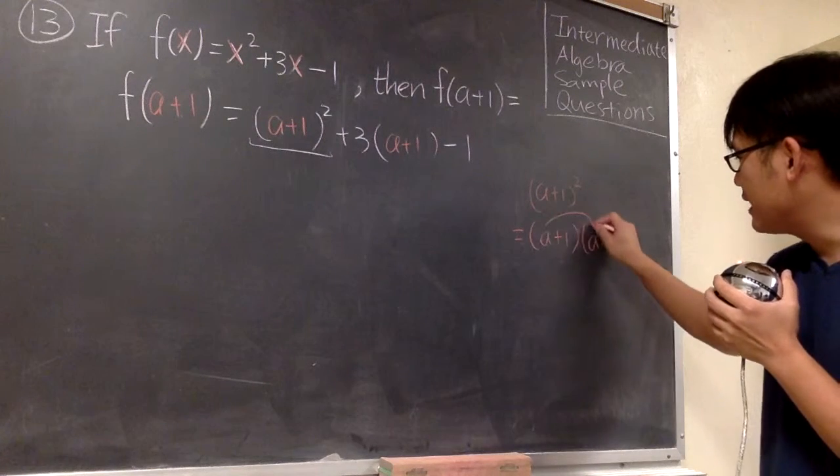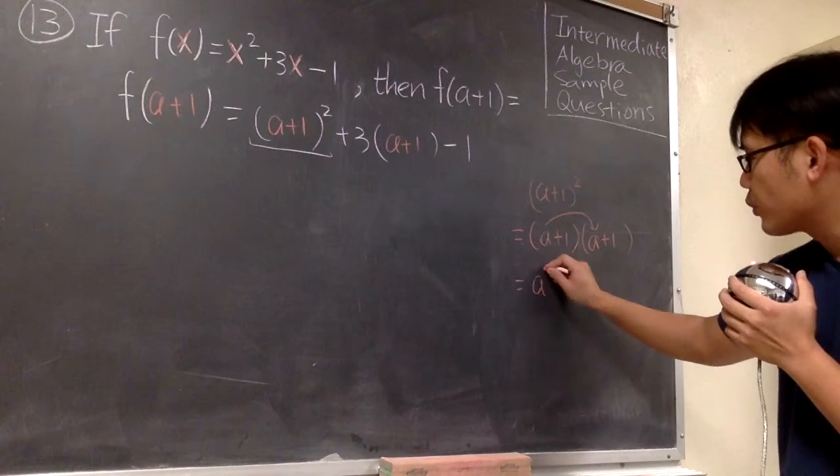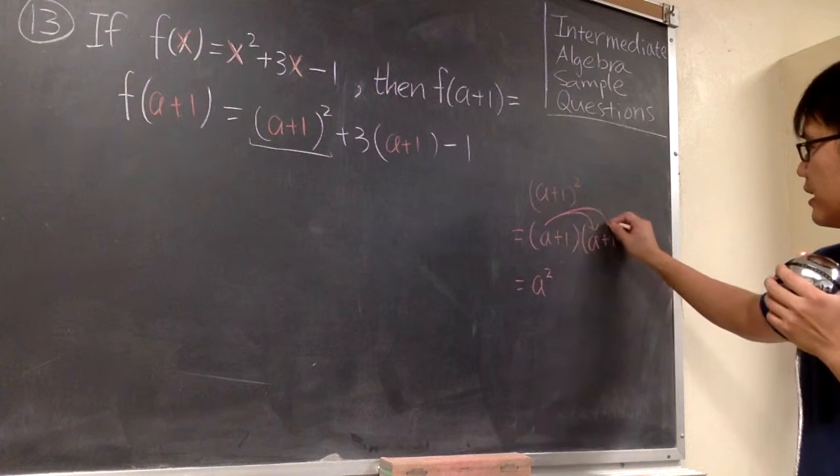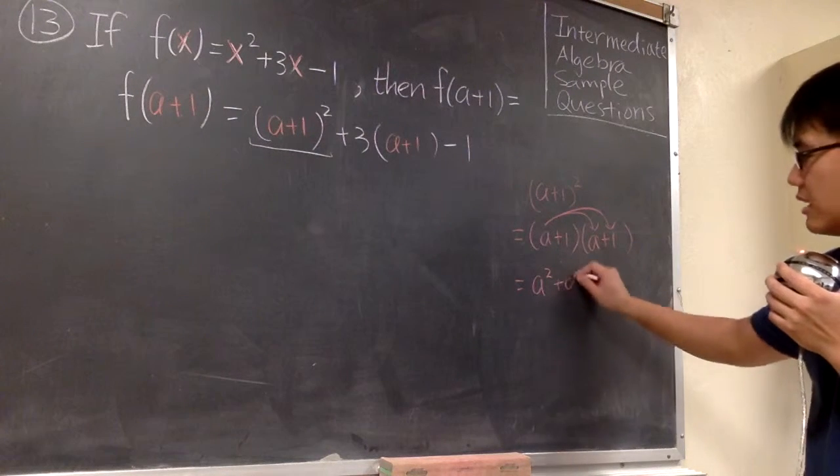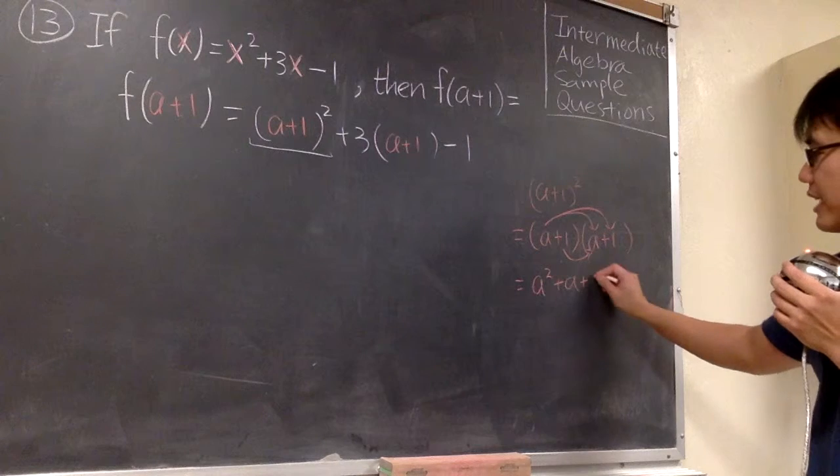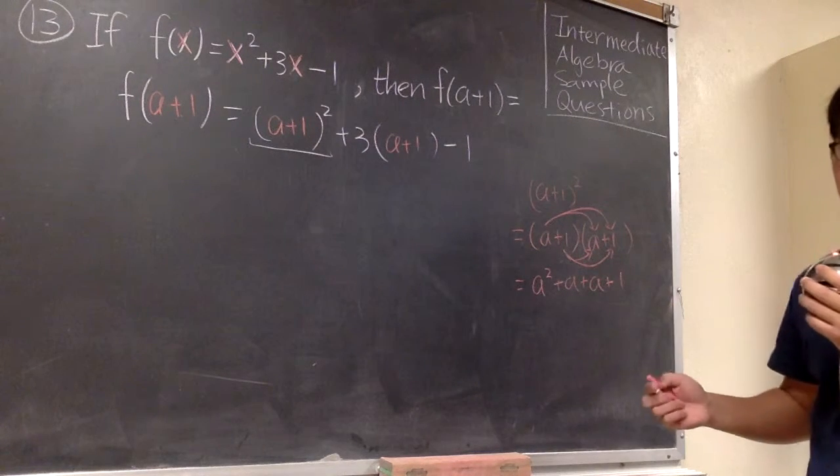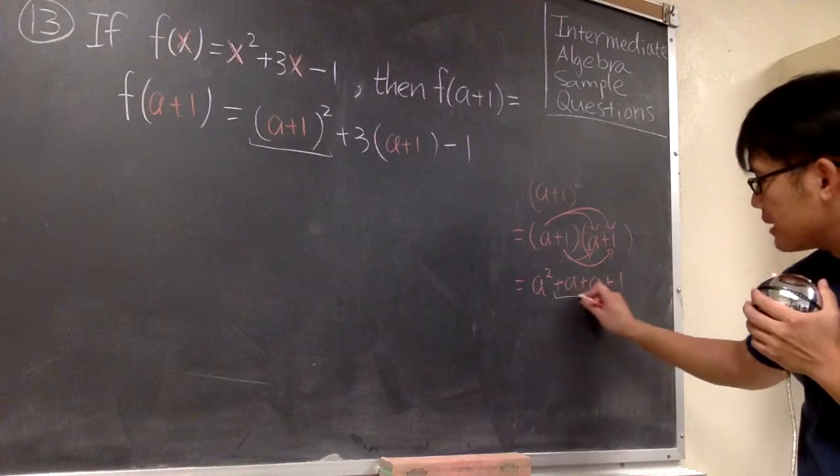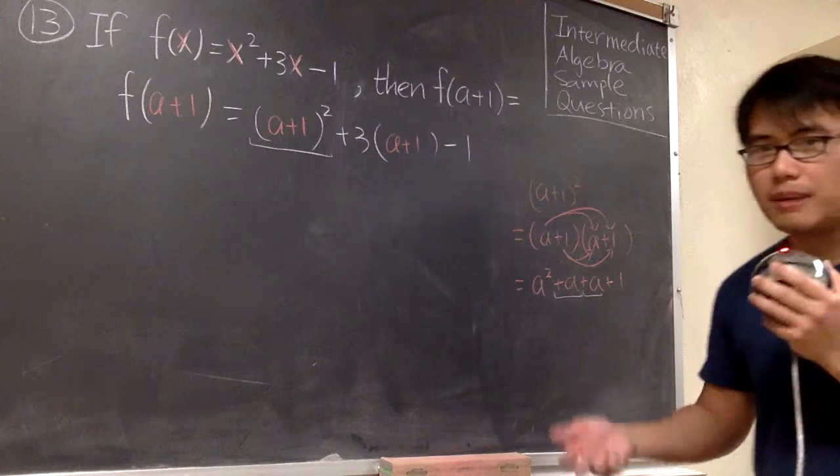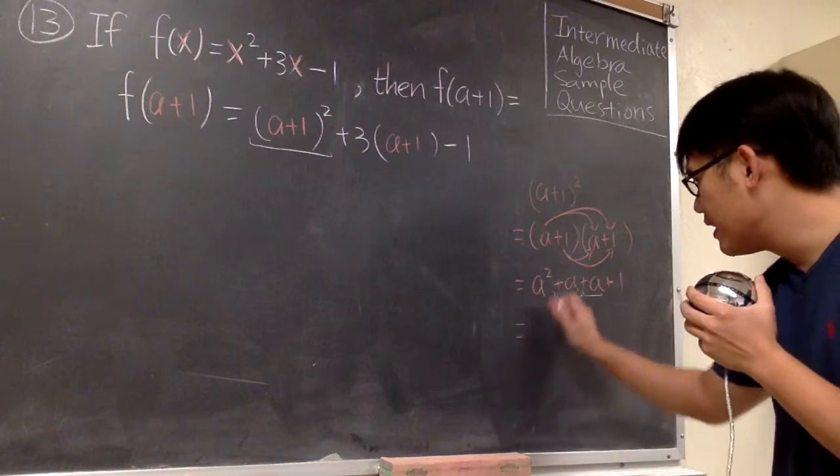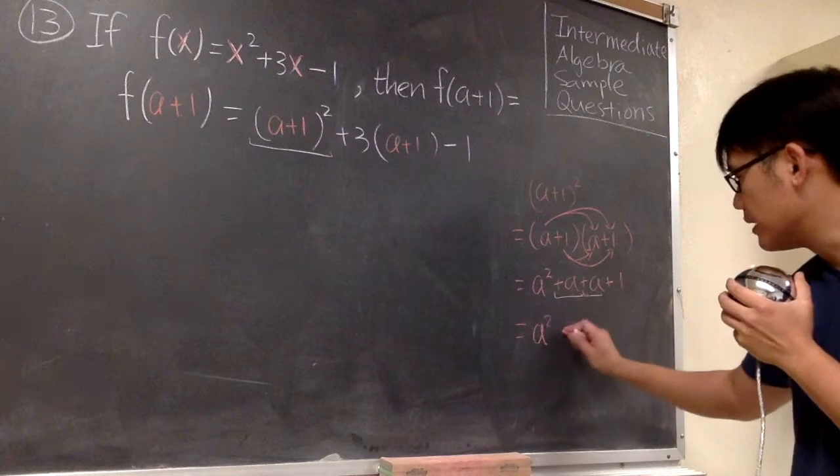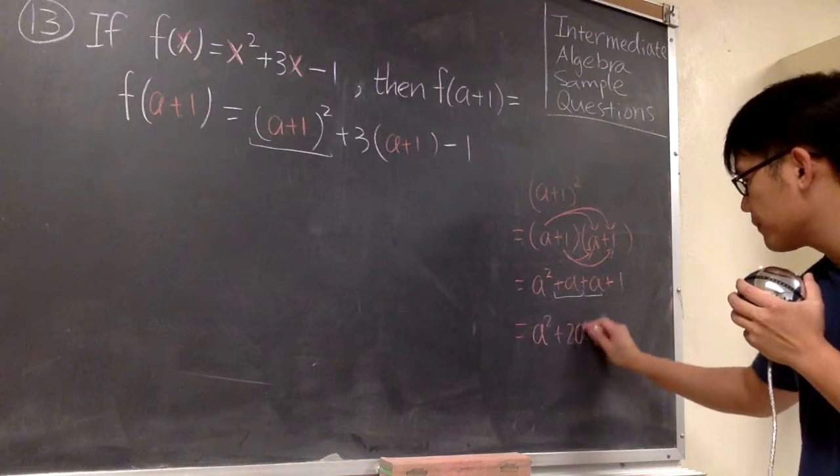We take the a times a, we get a². Take the a times 1, we have plus a. Take this 1 times a, we have another plus a, and then 1 times 1, we have plus 1. At the end, the plus a plus a, we can combine terms. So we have a² + 2a + 1.